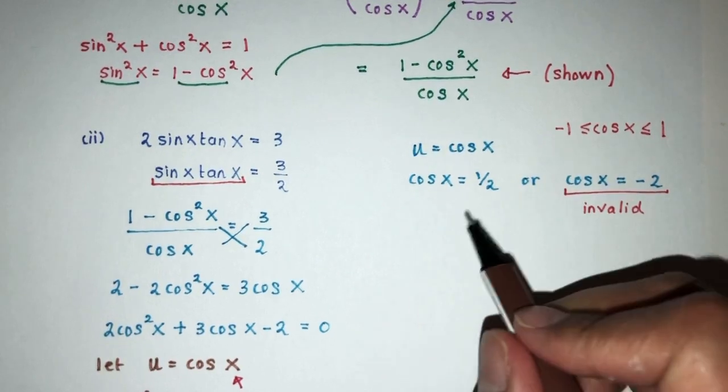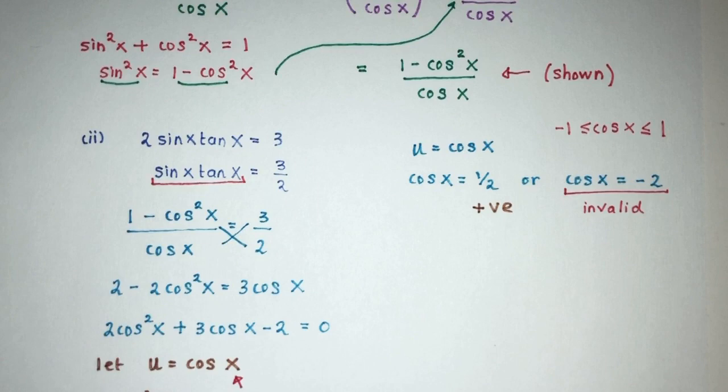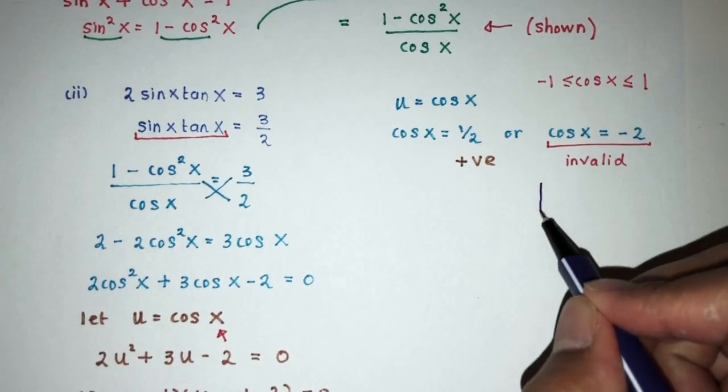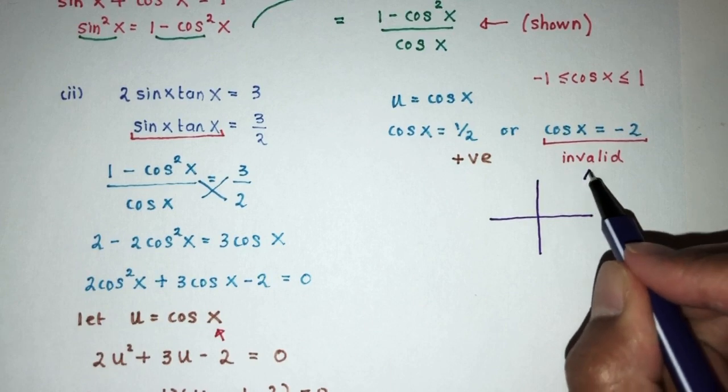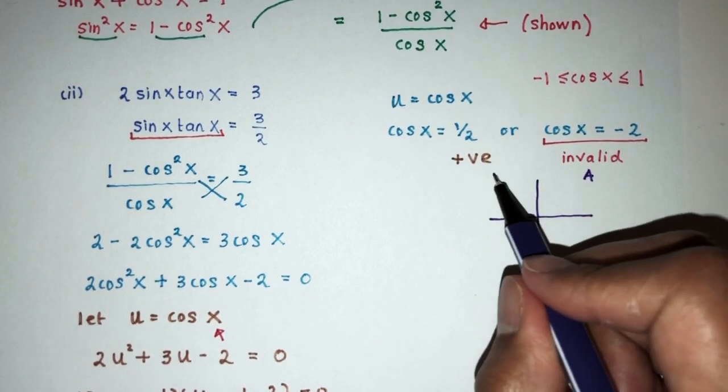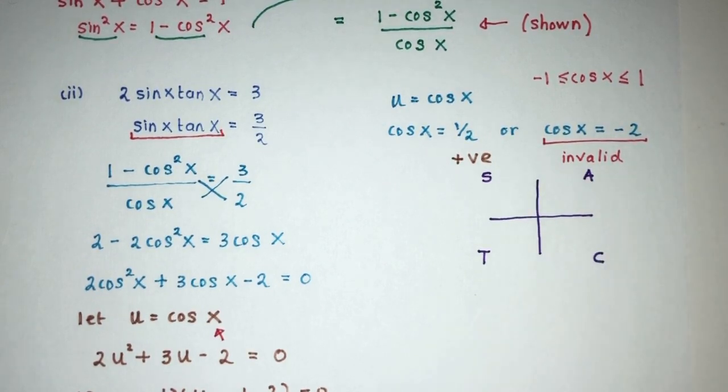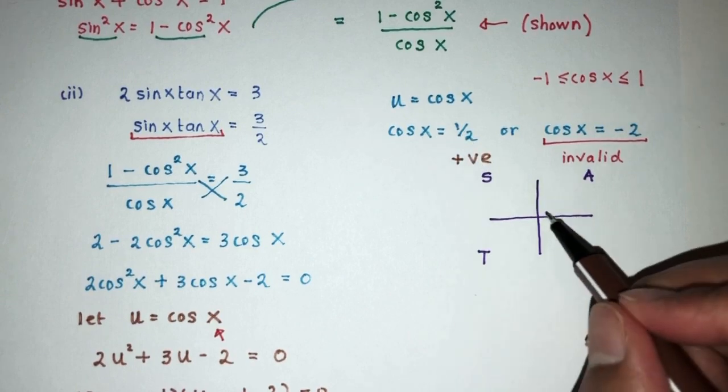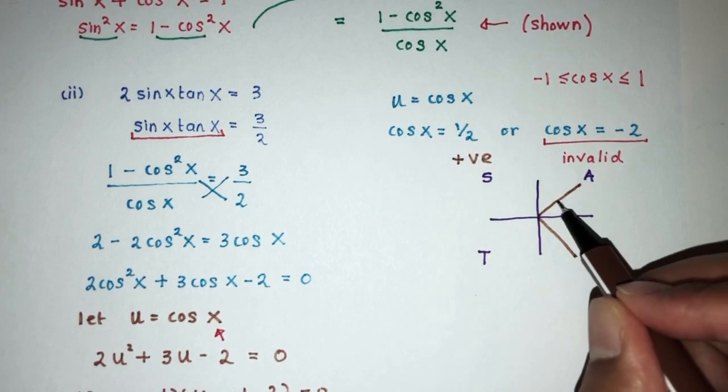Now we can see cos is a positive value. So let's look at our quadrants. Let's see where does it fall. So, this and this. We have a. So we have all is positive. Then we have s sine and t for tan and cos is positive here. So here, because cos is positive, it will be in the first quadrant and in the fourth quadrant.